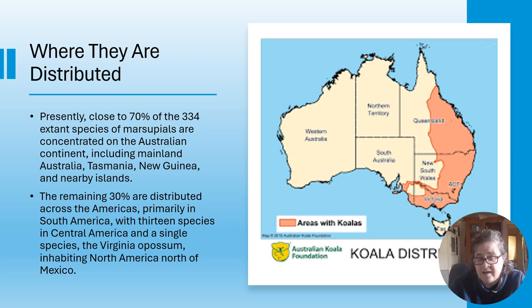You can see where koalas live in Australia - areas with koalas in sort of eastern Australia, forested areas. Presently close to 70% of the 334 extant, meaning living, species of marsupials are concentrated on the Australian continent, including mainland Australia, Tasmania, New Guinea and nearby islands. The remaining 30% are distributed across the Americas.